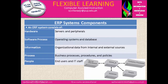Next, ERP system components. An ERP system consists of hardware, software, information, process, and people. Under the database, it is mentioned hardware, software, data, process, and people. But in ERP system components specifically, we have hardware, software, process, information, and people.